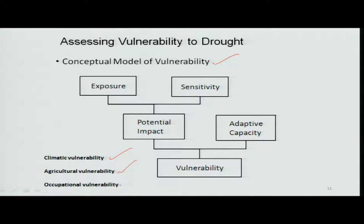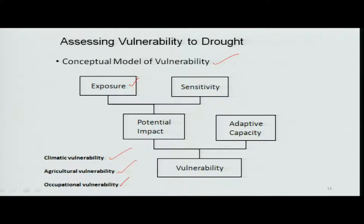Occupational vulnerability is another one, which is based on livelihood. Now, how these types of vulnerabilities can be assessed — one is exposure. Exposure means you are doing an activity that is likely to be affected. For example, if you are dependent on rainfall too much and irrigation is required, then your crop is likely to suffer.